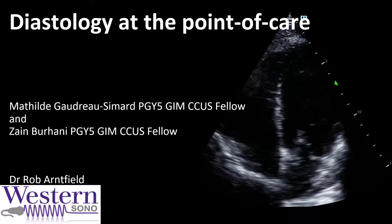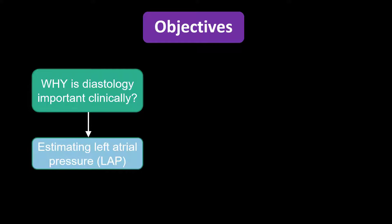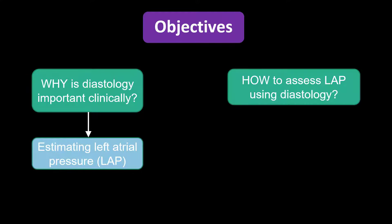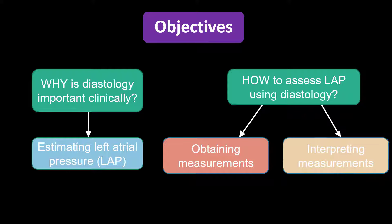The purpose of our talk today is not to do a deep dive into diastolic dysfunction as interpreted by a cardiologist, but rather to focus on what we think is the most useful clinical parameter of diastolic assessment, which is left atrial pressure. Our objectives are: first, to go through why diastology is important clinically as it pertains to estimating left atrial pressure; how to assess left atrial pressure using diastology; how to obtain and interpret measurements at the point of care; and finally, some cases that illustrate how useful left atrial pressure can be clinically.